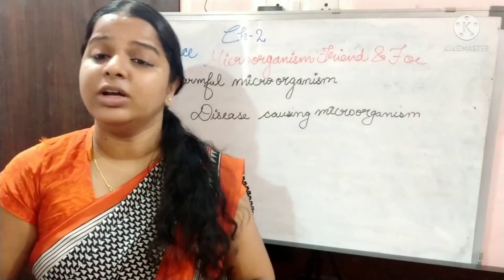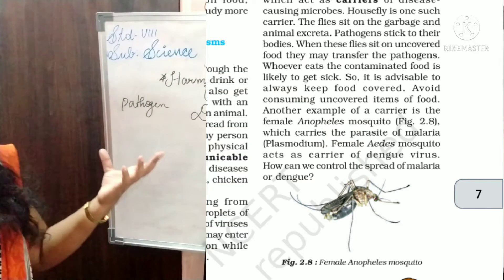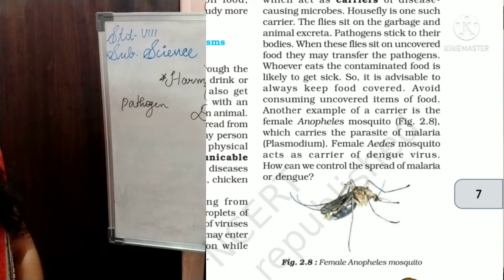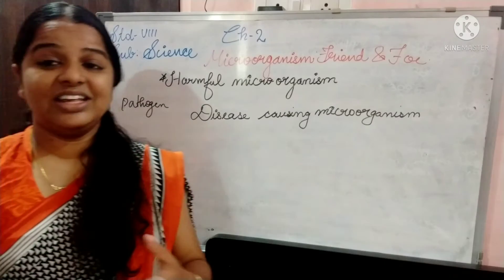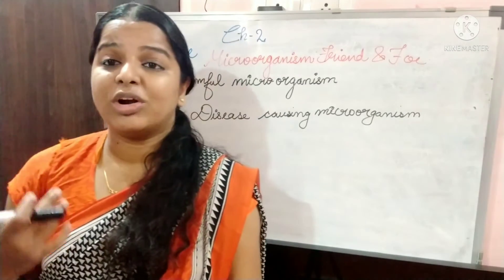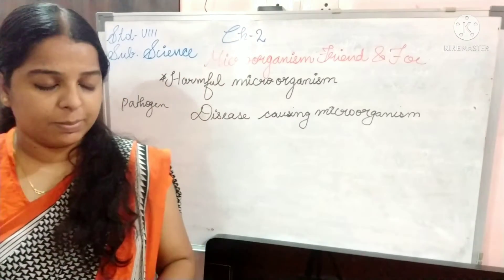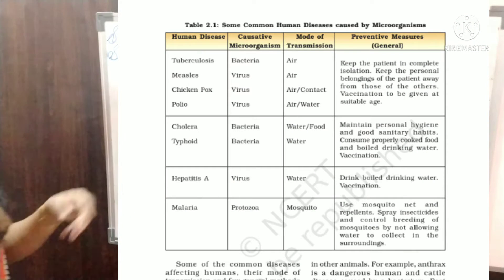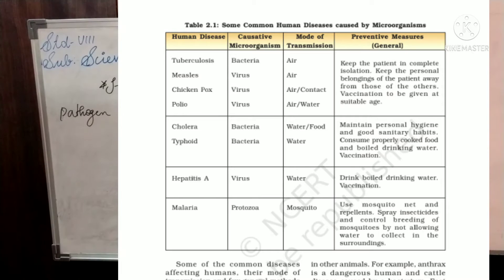These are the disease-causing microorganisms like protozoa, spread by mosquitoes. Mosquitoes spread due to stagnant water. Now rainy season is here, and due to that the water becomes stagnant. In that stagnant water, mosquitoes reproduce and increase their numbers. Students, you can see in the table that different types of diseases and their modes of transmission are given.